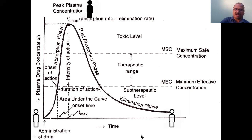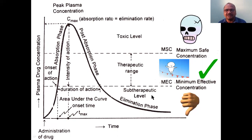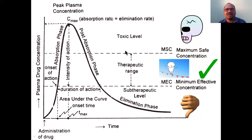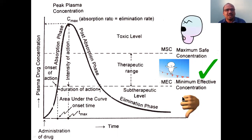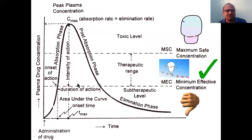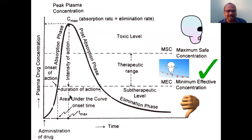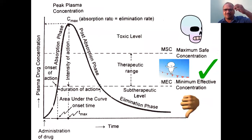Now see the terminology on the graph. This line is called the toxic level — symbolized with a skull. The drug should not enter the toxic zone — it is very dangerous. Below that is the sub-therapeutic level — 'sub' means below, like a submarine below the sea. In between is the therapeutic range. Drug concentration at Cmax should always be within the therapeutic range only — if it enters the toxic level, toxicity starts.